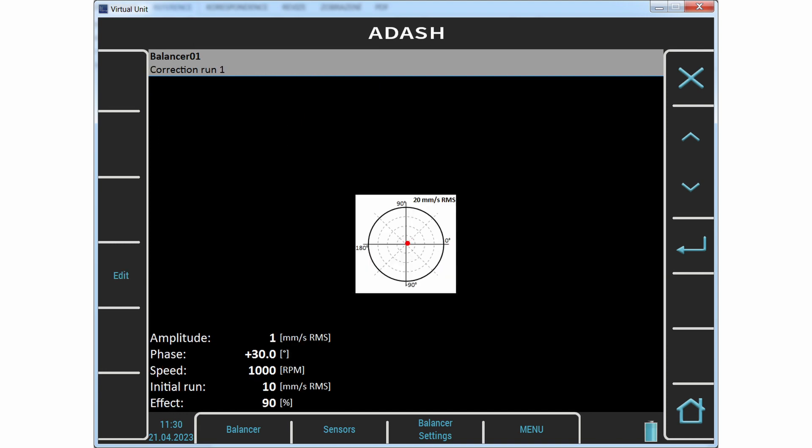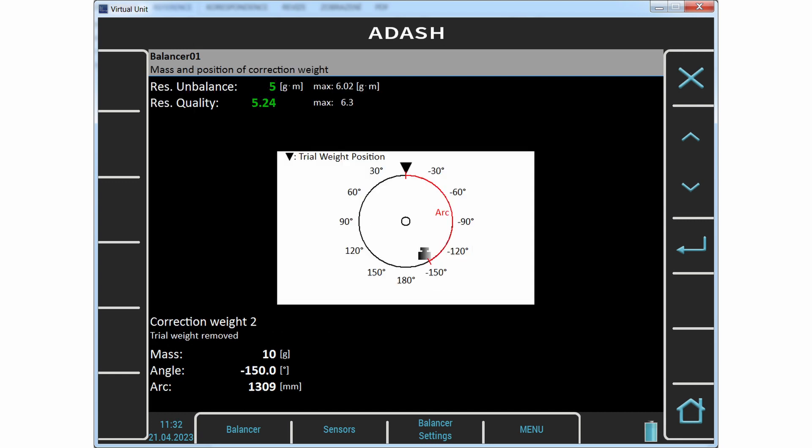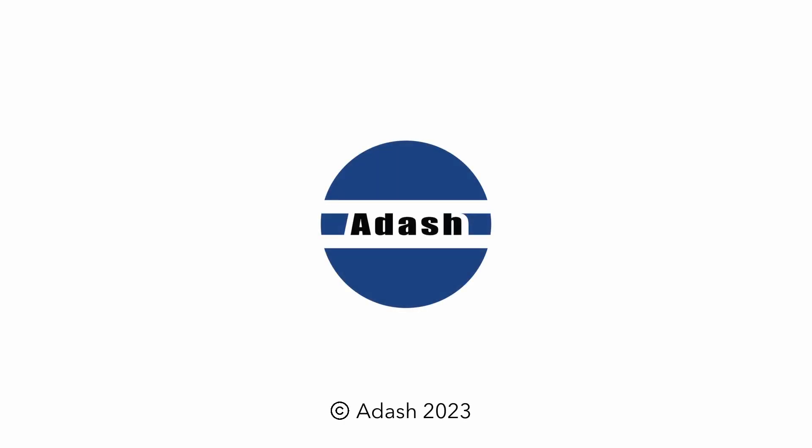We have mounted the required mass and we measure again. On the next screen we can see that values are green colored and are below the permissible values. And that is all. Thank you for watching and you can add questions or comments to this video.